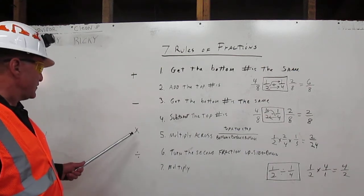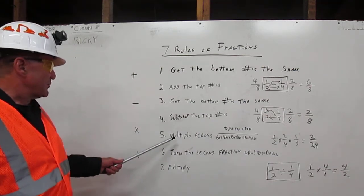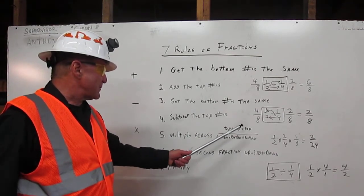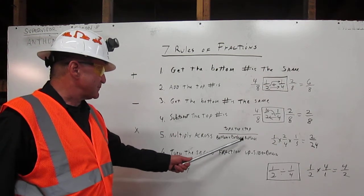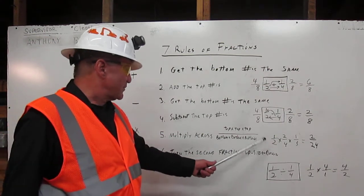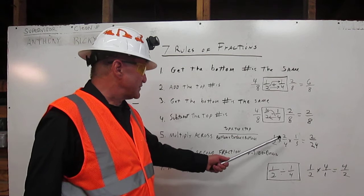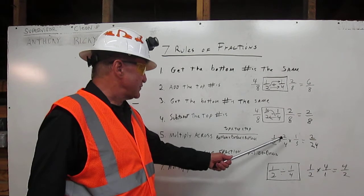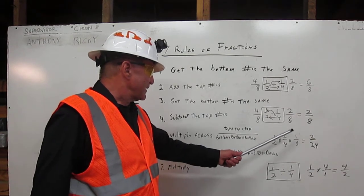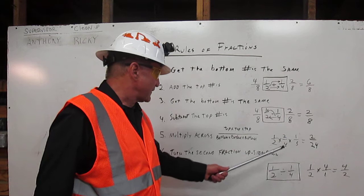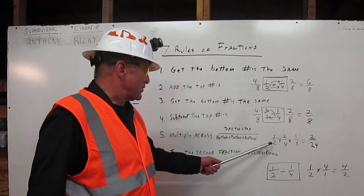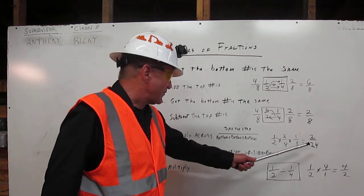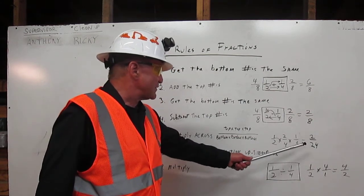To multiply fractions, there's only one rule: multiply across. Top number times top number times top number. Bottom number times bottom number times bottom number. In our example, we're going to multiply one-half times two-fourths times one-third. So we're going to multiply one times two, which gives us two, and two times one, which gives us two. On the bottom, we're going to multiply two times four, which gives us eight, and eight times three, which gives us twenty-four. Our answer is two over twenty-four.